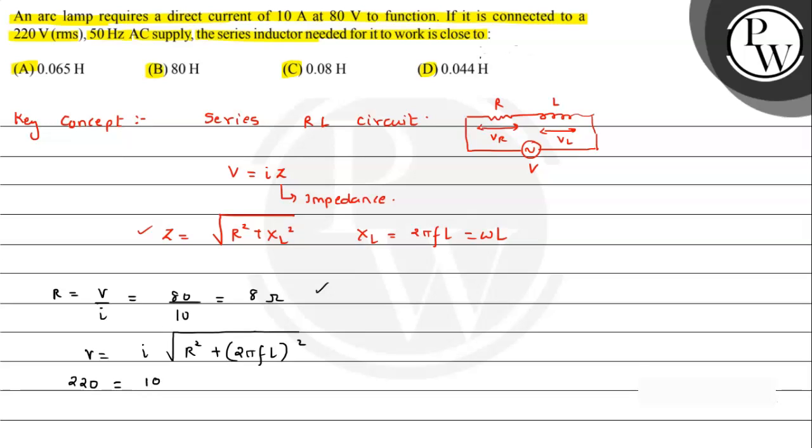This is the value, and also we need to understand the RMS value of AC current which will give the same effect as that of the constant current. So it can be further written as R² plus 2πf squared.